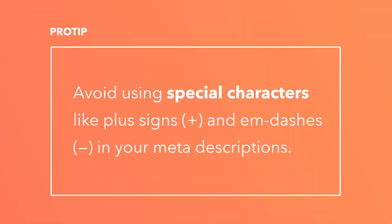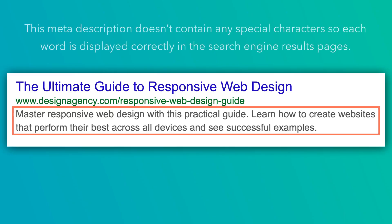Special characters might appear just fine on your computer screen, but search engines can't read those symbols very easily. These are known as non-alphanumeric characters. Avoid using special characters like plus signs and em dashes in your meta descriptions. Special characters often don't appear in search results as you intended, and they may be removed altogether. This meta description doesn't contain any special characters, so each word is displayed correctly in the search engine results pages.